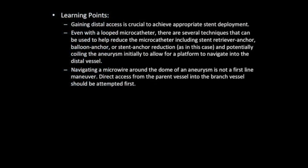Learning points for this case: Gaining distal access is crucial to achieve appropriate stent deployment. Occasionally, you will need to learn how to loop a microcatheter in a larger aneurysm and effectively reduce the loop. If the loop cannot be reduced by simply pulling back on the microcatheter, deploying the stent distally and allowing the force of the stent on the parent vessel to act as an anchor will allow one to reduce the microcatheter loop prior to finishing deployment of the stent. It should be noted that navigating a catheter and a stent around an aneurysm due to difficult access is not a first-line maneuver, and direct access from the parent vessel into the branch vessel should be attempted first. Only when this fails should one consider bringing a catheter in and around the aneurysm followed by a stent, as this may increase the risk of rupturing the aneurysm.